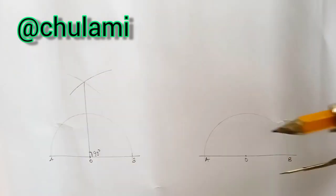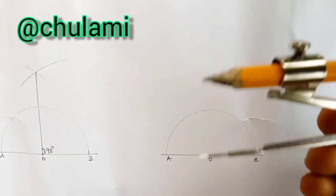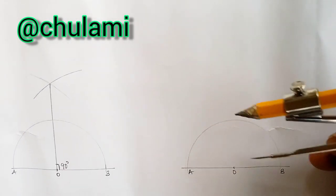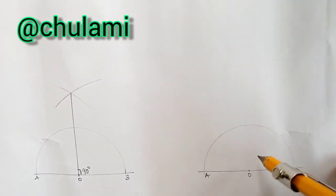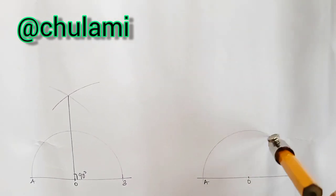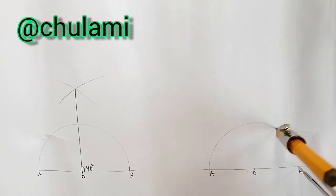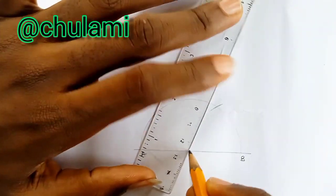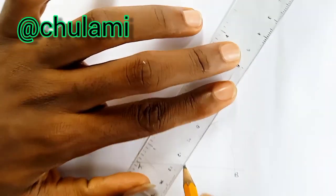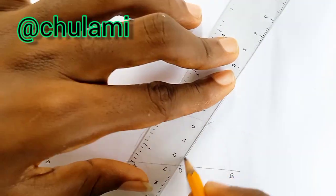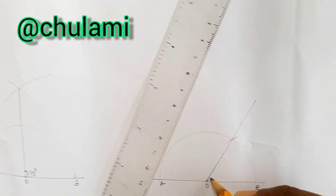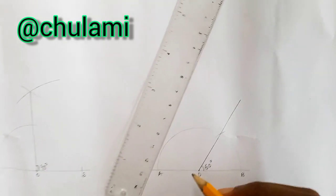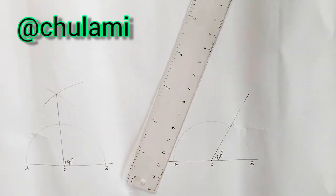Now, with that same radius, without shaking your compass, the radius of this semicircle, you keep the compass that way. You pivot at B, you cut an arc on the semicircle. Now, you join point zero to that arc. This is angle 60, this angle here is called 60 degrees.